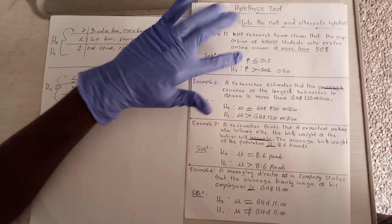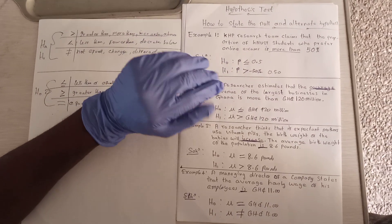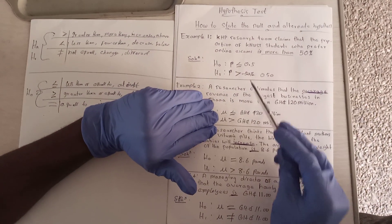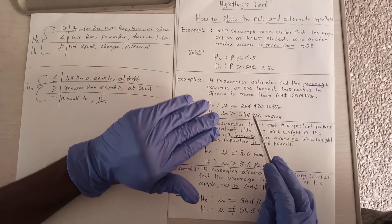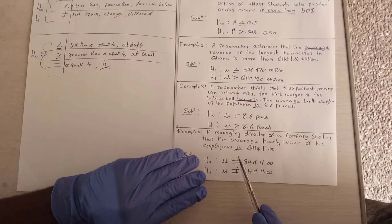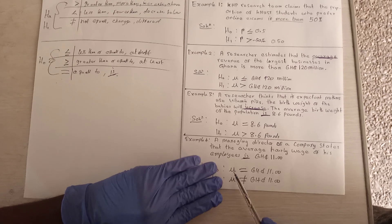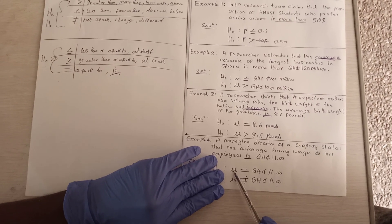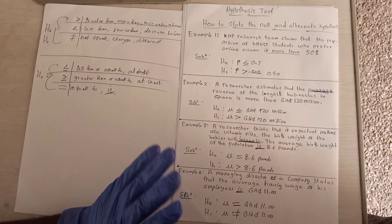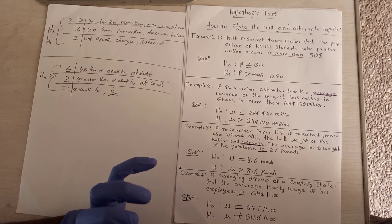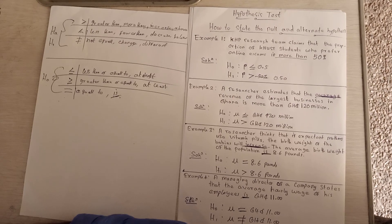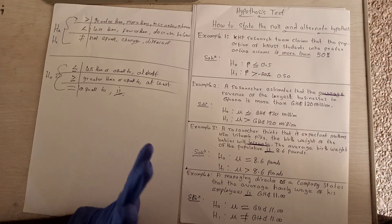Be careful: I used p in the proportion question because it says 'proportion,' and I used μ for the mean questions because they involve averages. That is how you state the null and alternate hypothesis for a one-sample test statistic.